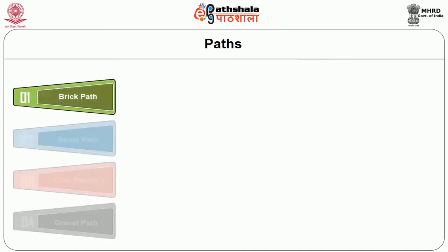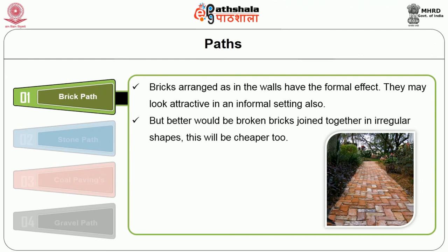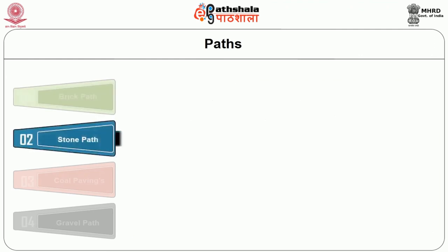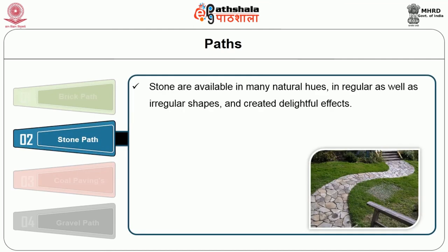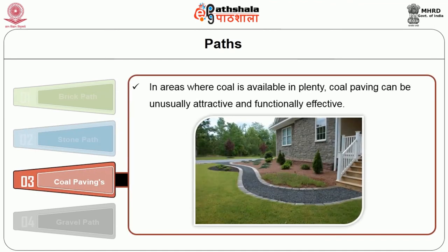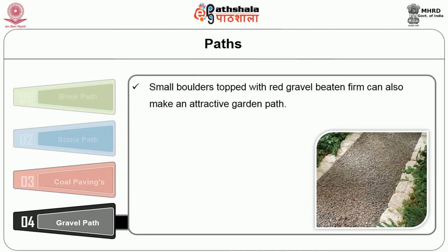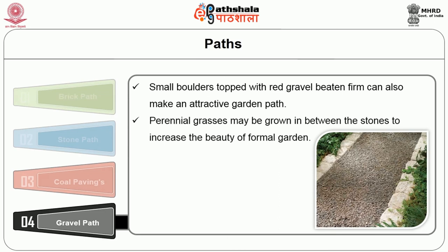The types of paths are: brick paths — bricks arranged in walls have a formal effect and look attractive in informal settings too; broken bricks joined together in irregular shapes would be cheaper. Stone paths — stones are available in many natural hues in regular as well as irregular shapes, creating delightful effects; they can be embedded in soil or earth, and mortar rubble in irregular shapes can be substituted. Coal paving — in areas where coal is available in plenty, coal paving can be unusually attractive and functionally effective. Gravel path — smaller boulders topped with red gravel beaten flat can make an attractive garden path; perennial grasses may be grown between the stones to increase the beauty of the formal garden.